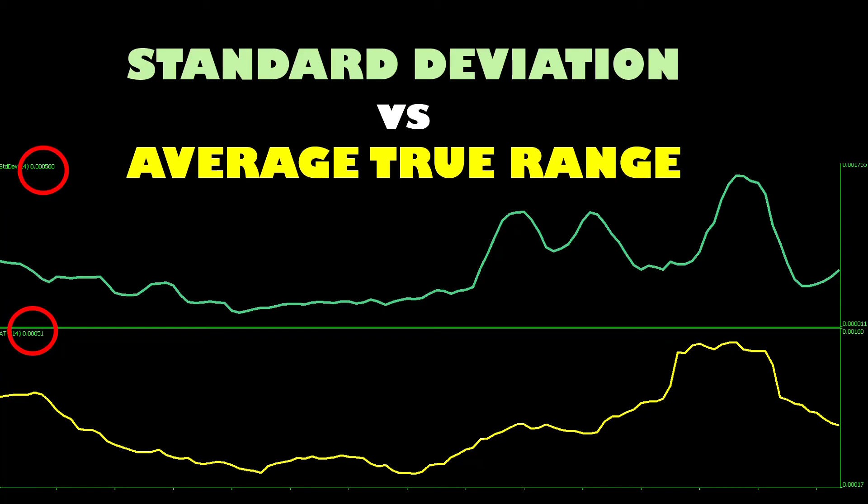But do be aware that the standard deviation indicator will generally give higher highs in its reading than the average true range does when it does get volatile. And when there's no volatility at all, the standard deviation generally reaches lower lows than the ATR does, so it can be a bit more extreme in that sense.